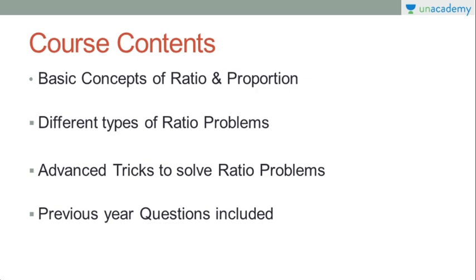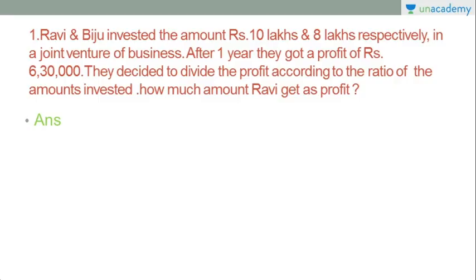Let's start with the first question. Ravi and Biju invested the amount of Rs. 10 lakhs and 8 lakhs respectively in a joint venture of business. After one year, they got a profit of Rs. 6 lakh 30 thousand. They decided to divide the profit according to the ratio of the amounts invested. How much amount does Ravi get as profit?